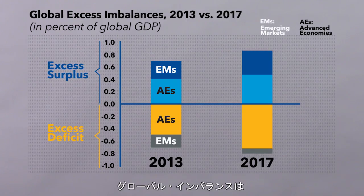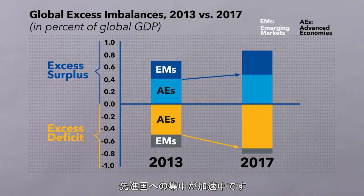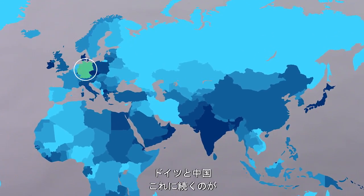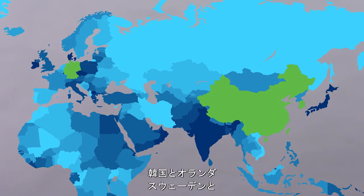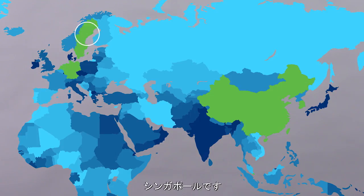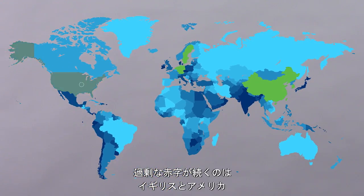While global imbalances remain broadly unchanged in recent years, they have become increasingly concentrated in advanced economies. From a global perspective, excess surpluses have been especially large and persistent in a small group of countries, most prominently in Germany and China, and to a lesser extent in Korea, the Netherlands, Sweden, and Singapore. Excess deficits remain mainly in the United States and the United Kingdom.